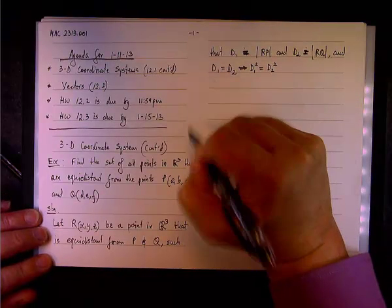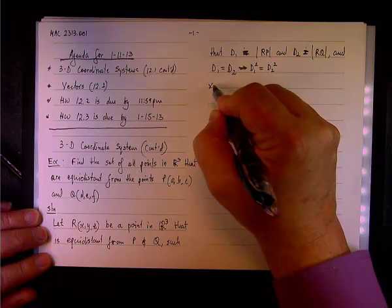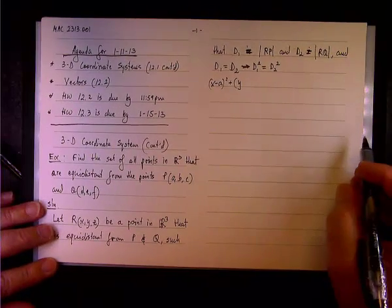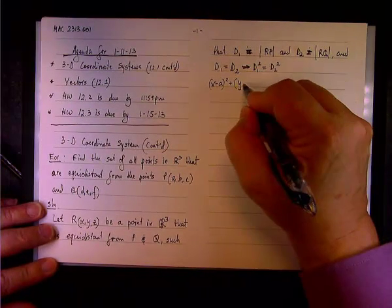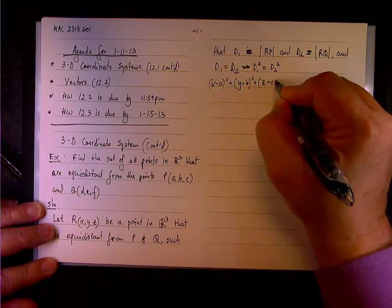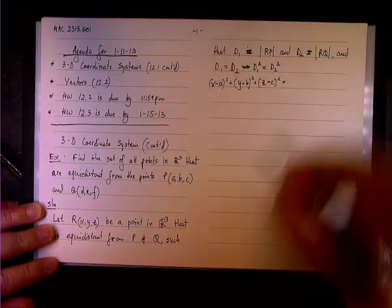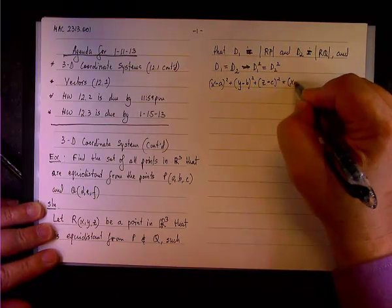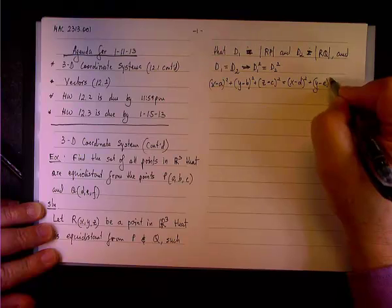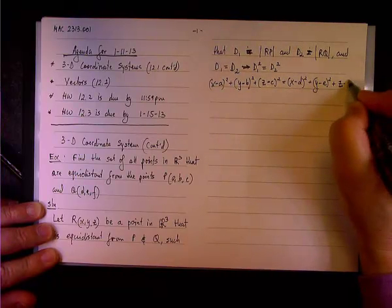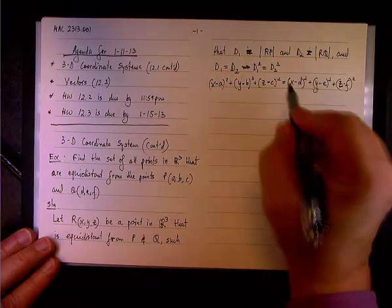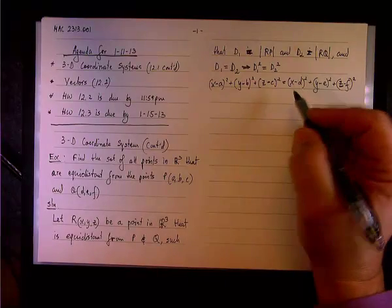Alright, so, D1, D1 is R, P. R is X, Y, Z, and P is A, B, C. So, D1 squared equals the quantity X minus A squared, plus the quantity Y minus B squared, plus the quantity Z minus C squared. Okay, this is D1 squared, D2 squared, we'll have the quantity X minus D squared, plus the quantity Y minus E squared, plus the quantity Z minus F squared.